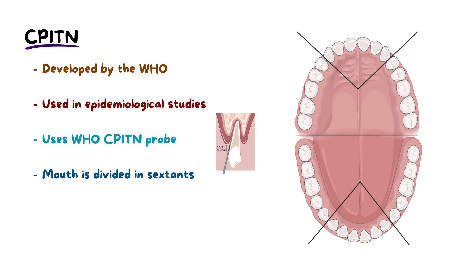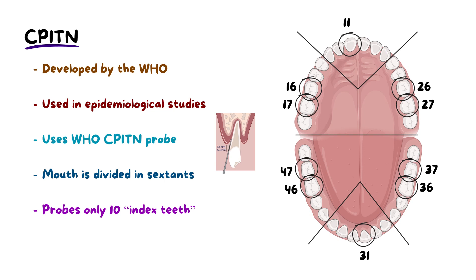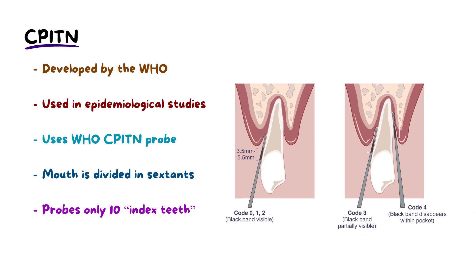This involves examining specific index teeth in each sextant: the 17, 16, and 11 on the upper right; the 26 and 27 on the upper left; the 37, 36, and 31 on the lower left; and the 47 and 46 on the lower right. The focus is on these teeth to assess the overall periodontal health of each sextant, primarily for population-level surveys. Scores ranging from 0 to 4 reflect the severity of periodontal issues and treatment needs for each sextant.